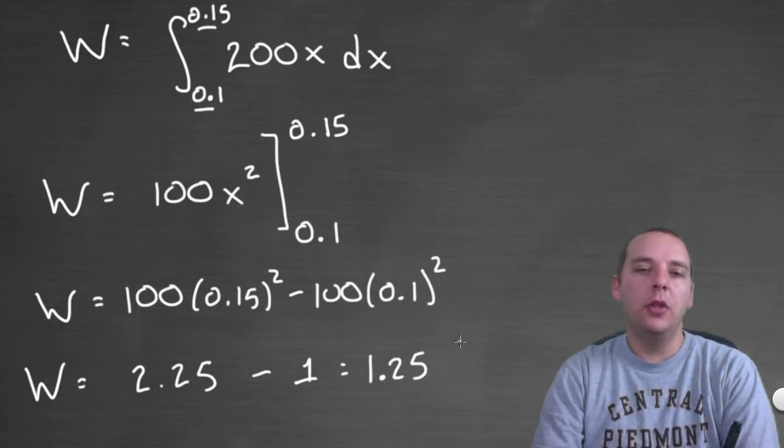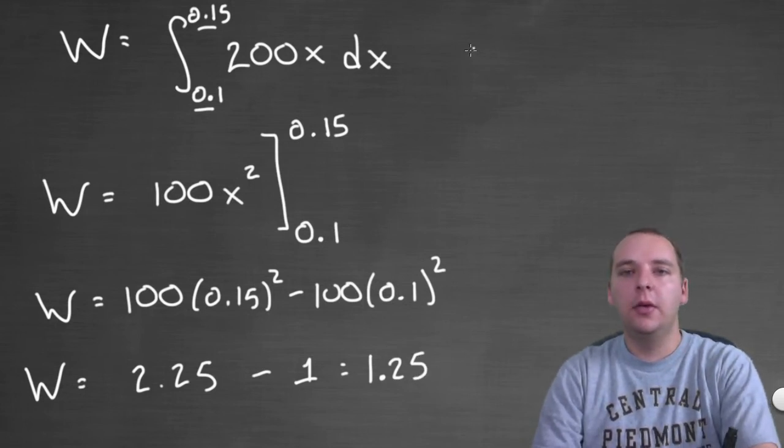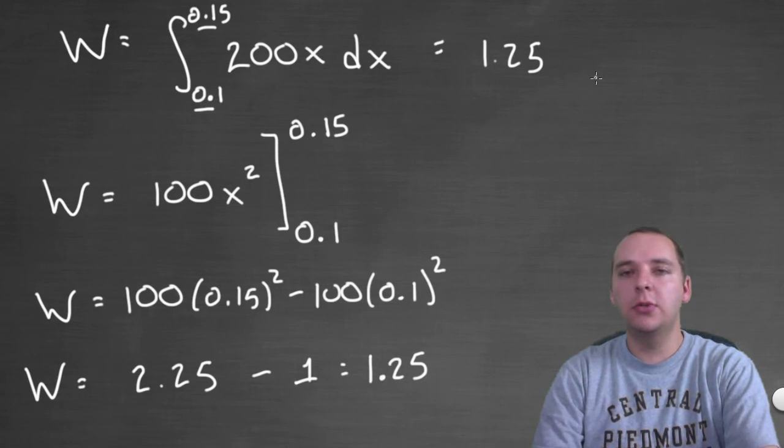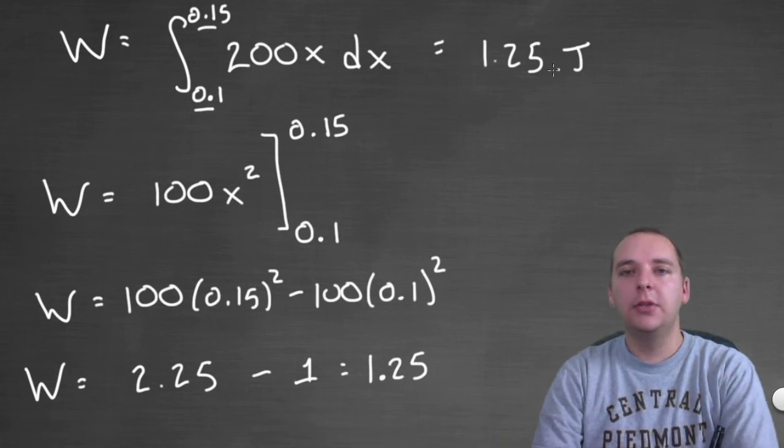So now what, what are the units for this guy? The units would be 1.25 either Newton meters, Newton meters, or there's also a shortened name for Newton meters, you could also say 1.25 joules. And so that's a unit of work that would represent the amount of work required to stretch your spring.